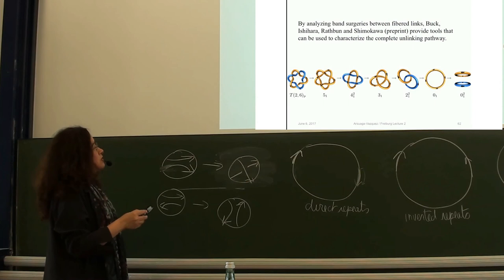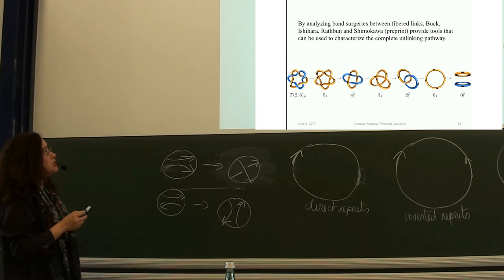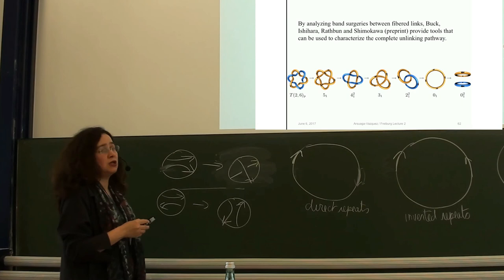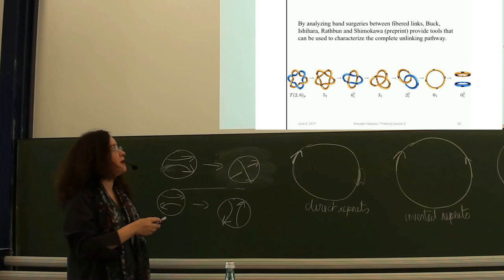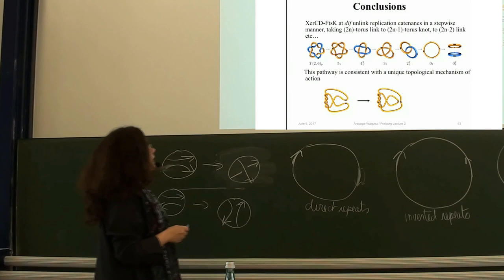By analyzing band surgeries between fiber links, Buck, Ishihara, Rathbun, and Shimokawa provide tools that can be used to characterize a complete unlinking pathway — not just the last bit, but the whole pathway, which is really nice. I wanted to talk about pathways and removing the assumption, but I can talk to you about that offline during the coffee break. Thank you.